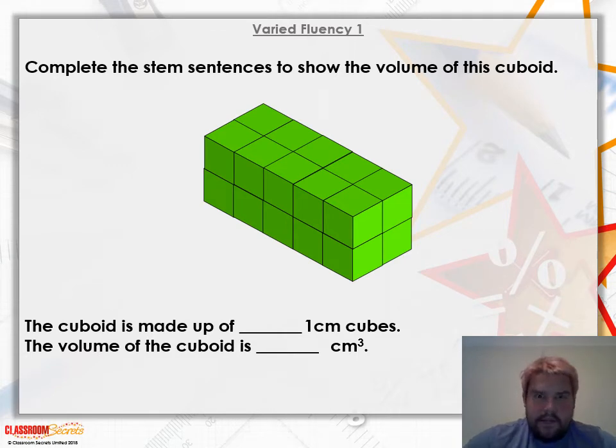So for VF1, complete the stem sentences to show the volume of this cuboid. Volume of this cuboid is made up of how many one centimeter cubed? So quite simply, we could just count them up. So we've got one, we've got two, three and four. So this whole block here, that's made up of four centimeters cubed.